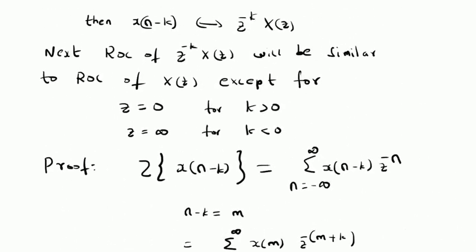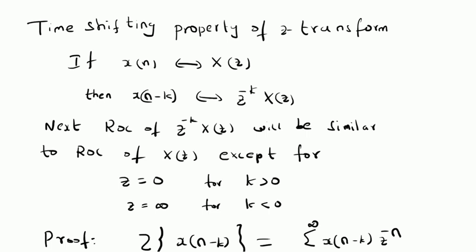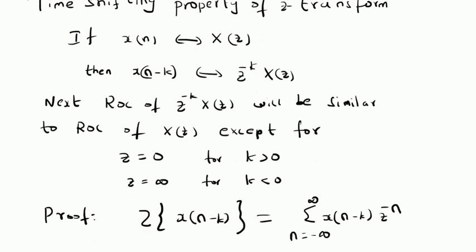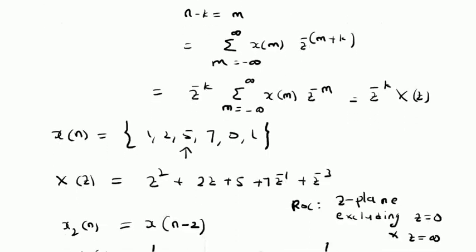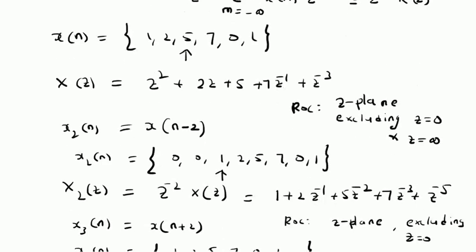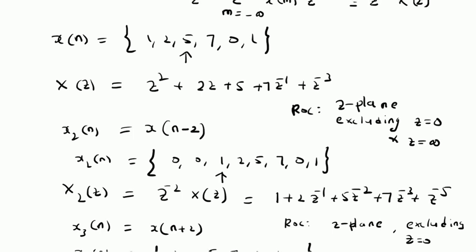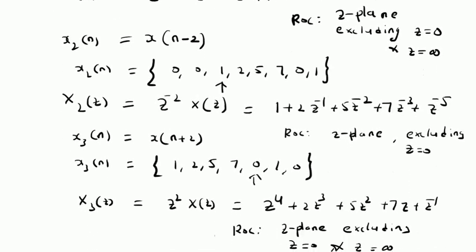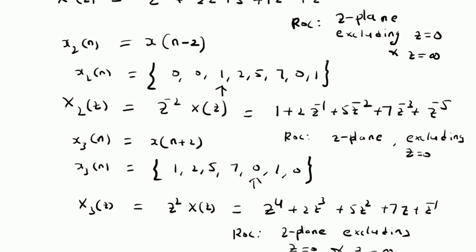To summarize, we have looked at the Z-transform for a shifted signal. That is, X of n minus k has a Z-transform Z power minus k times X of z. The proof directly follows from the definition of the Z-transform. We also looked at examples using this shifting property: if you delay the signal by two points, the corresponding Z-transform is multiplied by Z power minus 2, and if we advance by two points, the Z-transform gets multiplied by Z power 2, with corresponding changes in the ROC depending on the powers of Z.